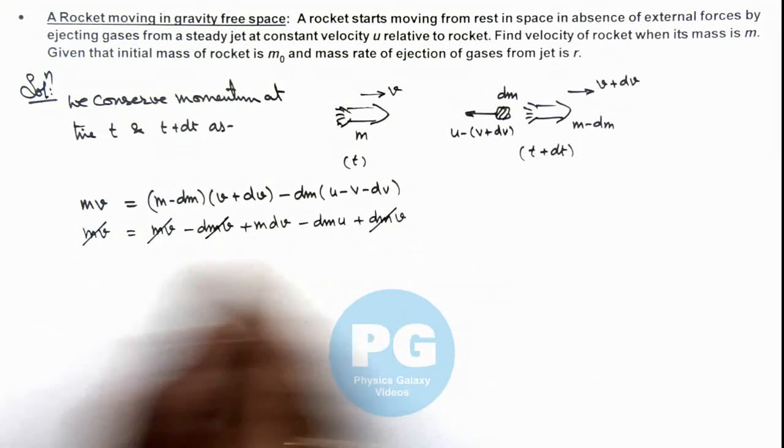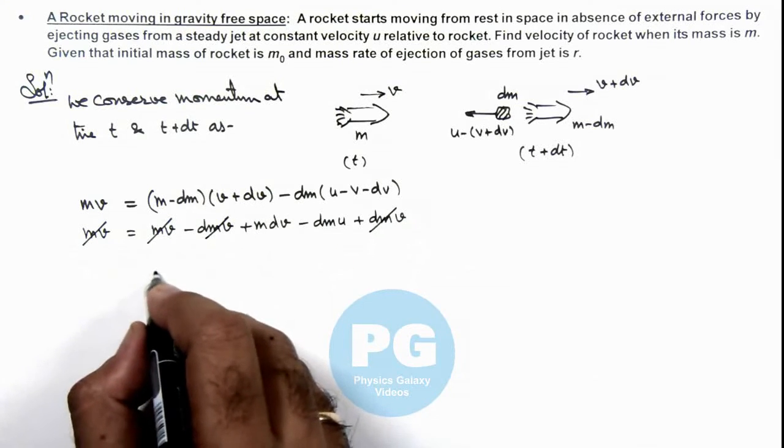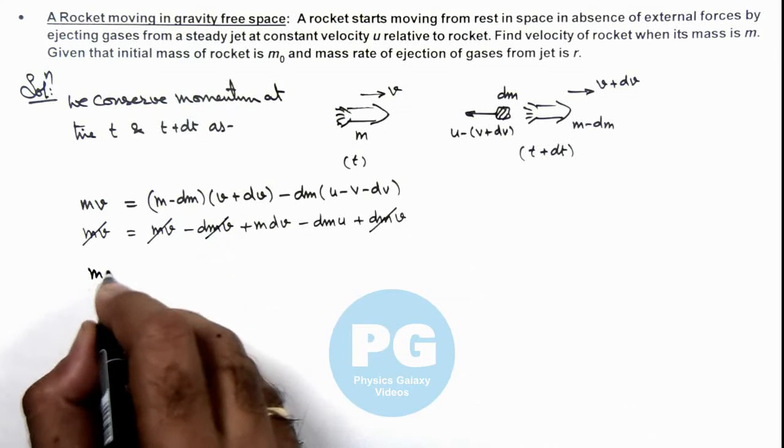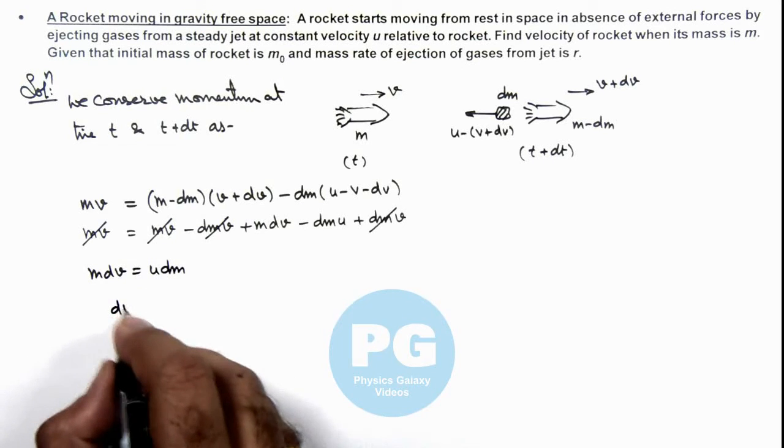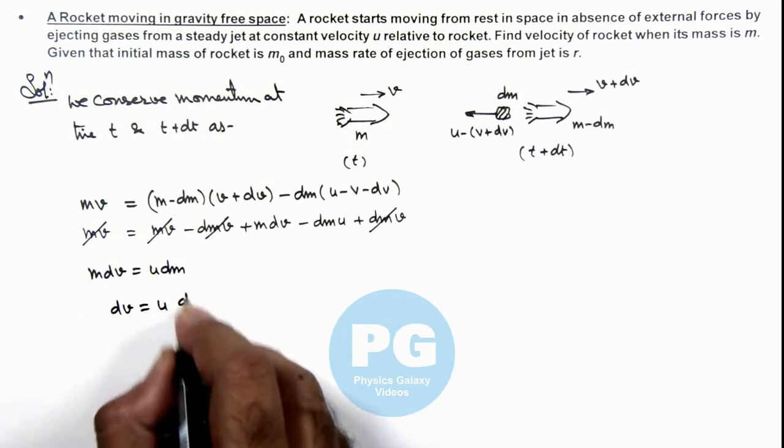So the relation we are having is mdv equals udm, so here we can write dv equals udm by m.